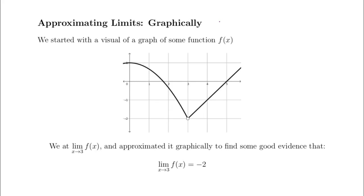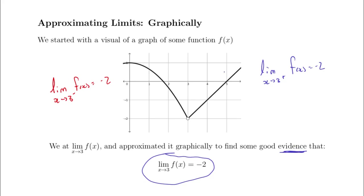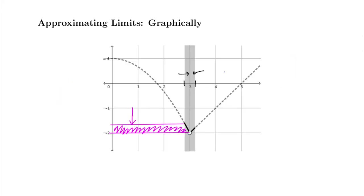We started with a visual and had pretty convincing evidence that the limit as x approached 3 from the left was negative 2, and the limit as x approaches 3 from the right was also negative 2. We have the result that for a two-sided limit to exist, left and right both have to be the same. So we have really good evidence that this is our limit — we're guessing it's negative 2. Maybe the interval is collapsing on negative 1.999285, some number close to negative 2 that we can't distinguish at this scale.